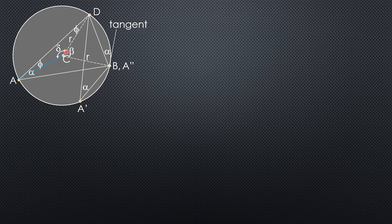Also note that each interior angle of triangle ABD is called an inscribed or peripheral angle. In particular, let's consider point A, which is an inscribed or peripheral angle with measure alpha. So again, delta equals 180 degrees minus 2 times p.